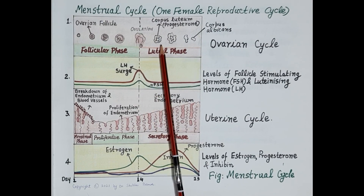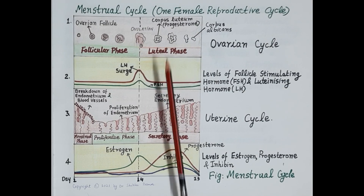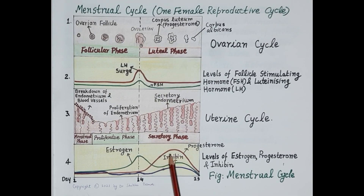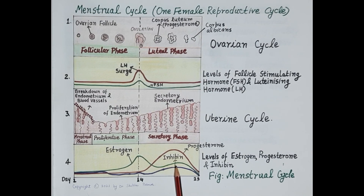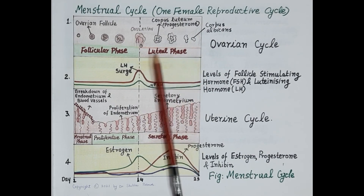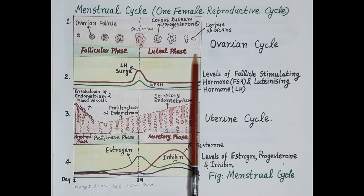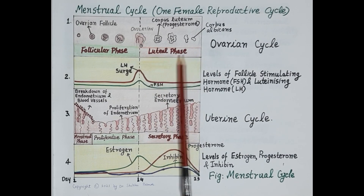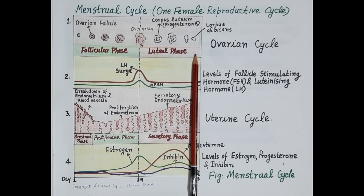The corpus luteum produces large amounts of progesterone and comparatively small amounts of estrogen. The second half of the ovarian cycle is called the luteal phase, and progesterone is produced only during this phase, that is the luteal phase.